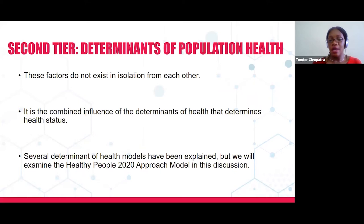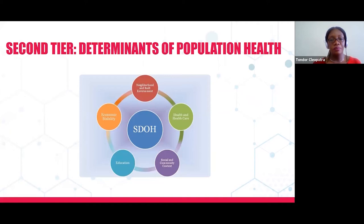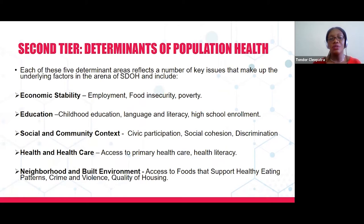The Healthy People 2020 social determinants of health model has five main domains: neighborhood and built environment, health and healthcare, social and community context, education, and economic stability. These five domains have key issues or underlying factors to consider. For economic stability, we look at employment, food insecurity, and poverty. For education, we consider childhood education, language and literacy, and high school enrollment. For social and community context, we look at civic participation, social cohesion, and discrimination.